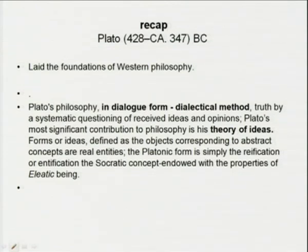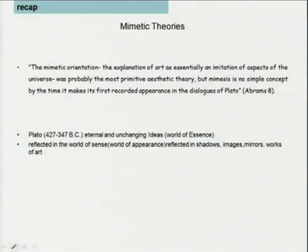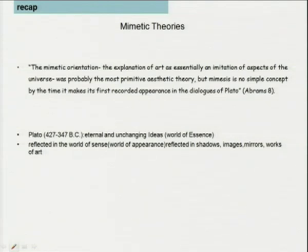In Lecture 1, we did classical criticism — mainly the classical theories starting with Plato to Aristotle. Plato laid the foundations of western philosophy, especially his dialectics, the dialogue form of argument, questioning truth through received ideas and opinions. In his theory of ideas, he introduced the mimetic theories. The mimetic orientation was essentially an imitation of aspects of the universe — probably the most primitive aesthetic and poetic theory. But mimesis is no simple concept.